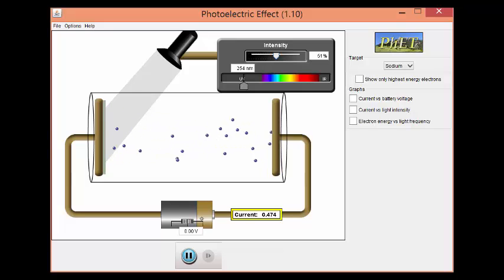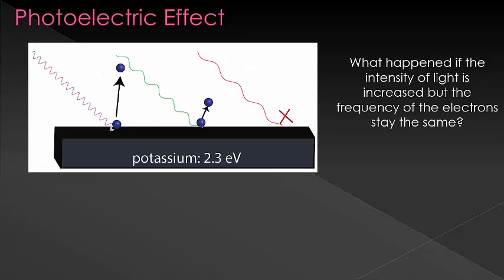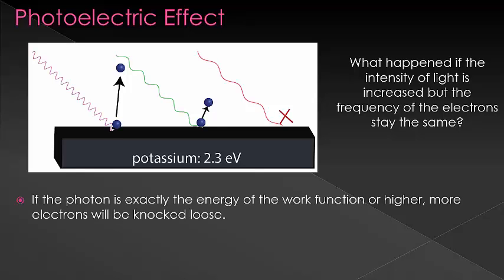Let's look at each of those questions again without the simulation to help. What happens if the intensity of light is increased? Intensity translates to a greater number of photons — we perceive more photons as brighter, since more photons are hitting our eyes. More photons will eject more electrons, because each photon can only eject a single electron. But of course that is only if you are above the threshold frequency. If you are below the threshold frequency, no intensity of light will ever eject an electron.